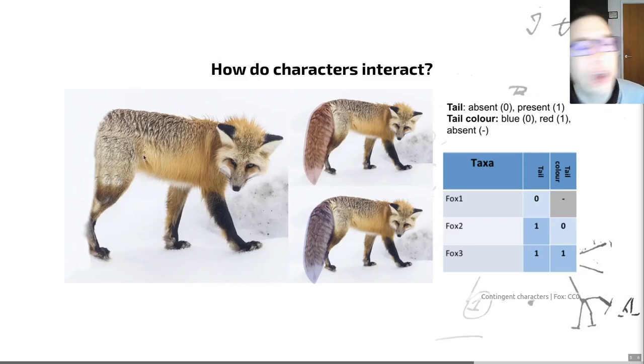But we may be coding this organism for its morphology. And we may be able to say, okay, this has got a tail. Also, this one doesn't have a tail. And those that do have a tail have a red, white tail or blue tail. And so there's this question of how do we code this? Is it better to code this as a single character with a no tail or red tail or blue tail?